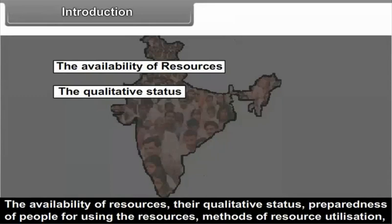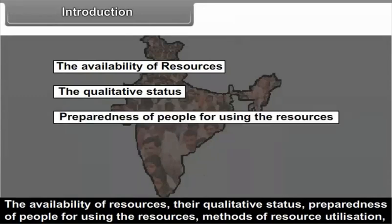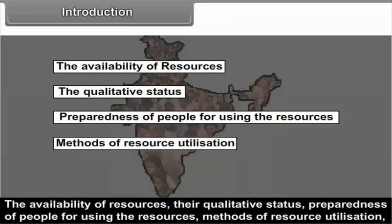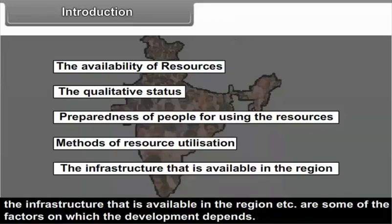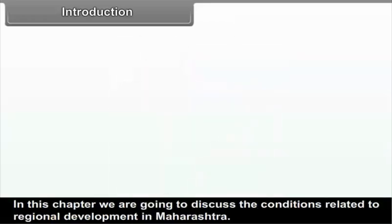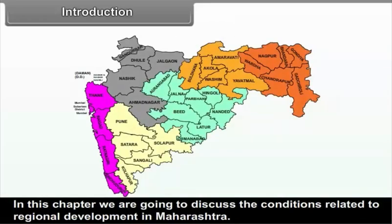The availability of resources, their qualitative status, preparedness of people for using the resources, methods of resource utilization, the infrastructure that is available in the region, etc. are some of the factors on which the development depends. In this chapter, we are going to discuss the conditions related to regional development in Maharashtra.